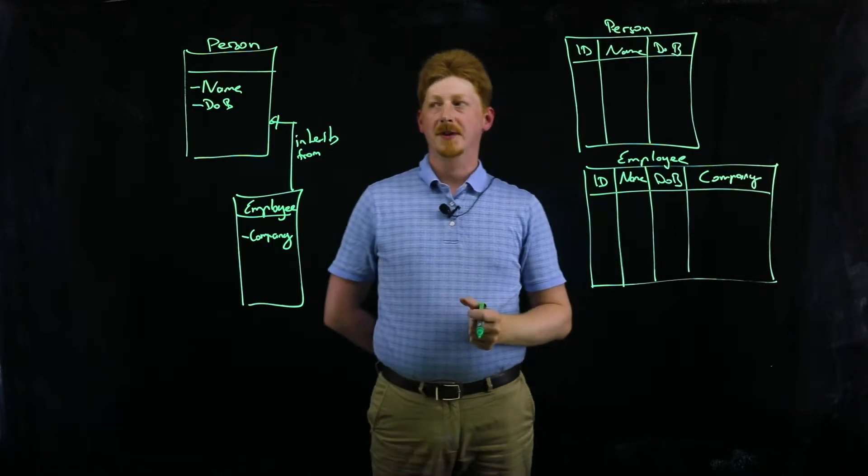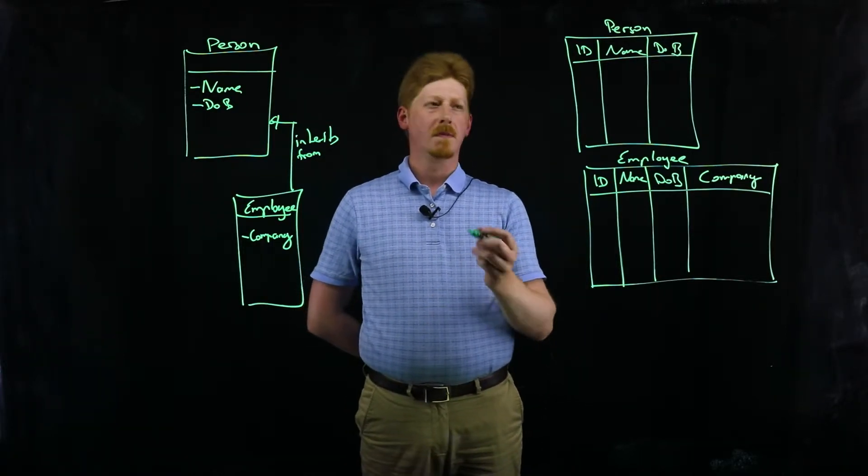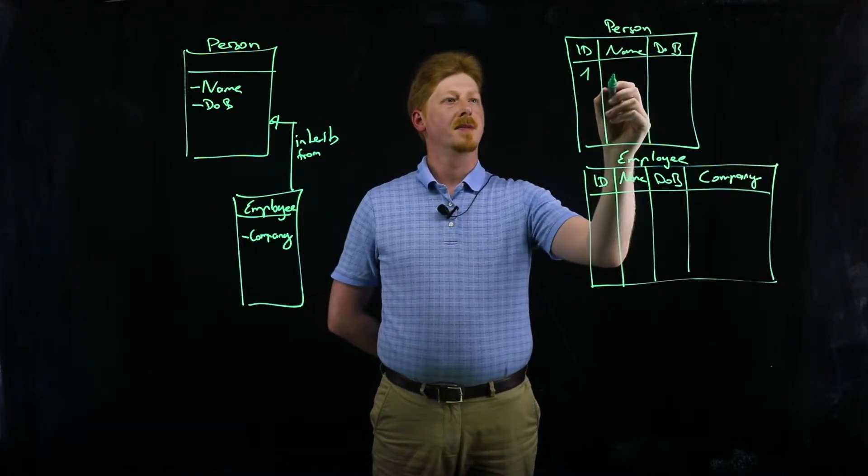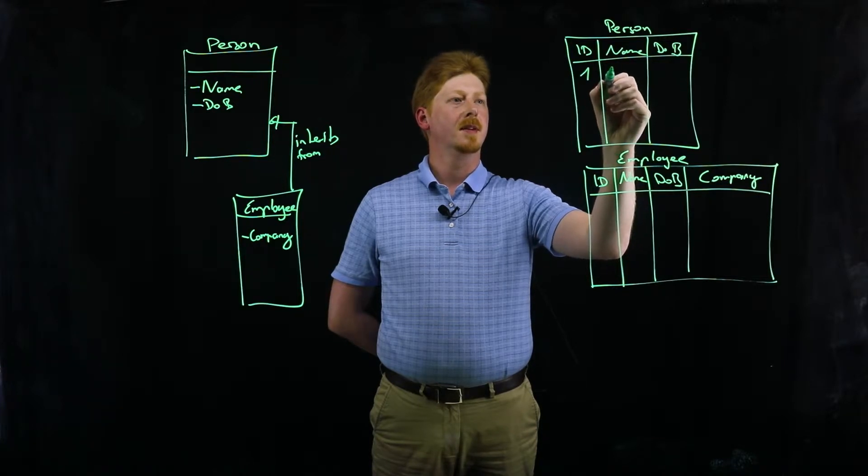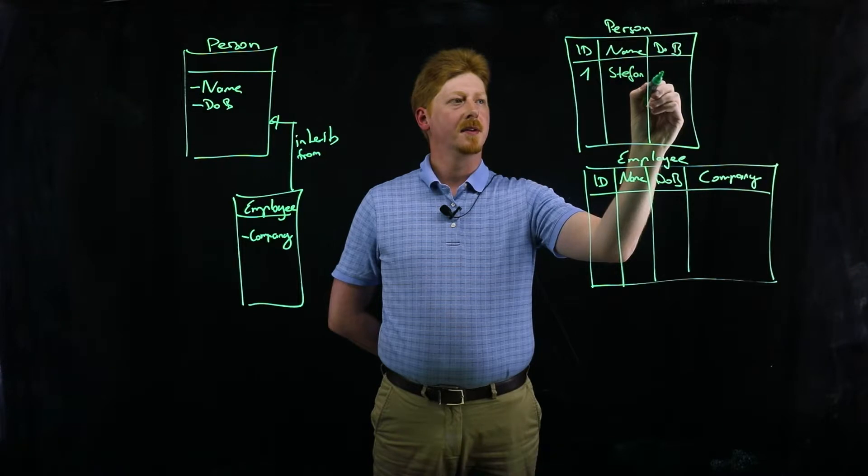So if I create an object and store it, let's say just a person, it will get stored as a person with the ID number 1. The name, let's say, is Stefan, and we give it a date of birth.